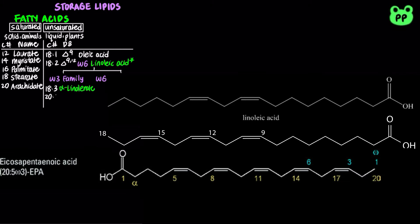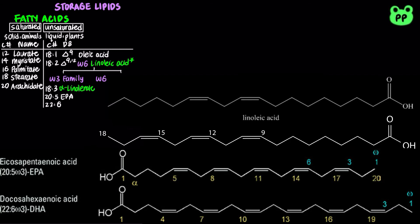These omega-3 fatty acids include the 20-carbon EPA, which stands for eicosapentaenoic acid, as well as the 22-carbon DHA, which stands for docosahexaenoic acid. The double bond position can be deduced from the omega number, which indicates the last double bond from the omega carbon. Fish oils are especially rich in EPA and DHA.